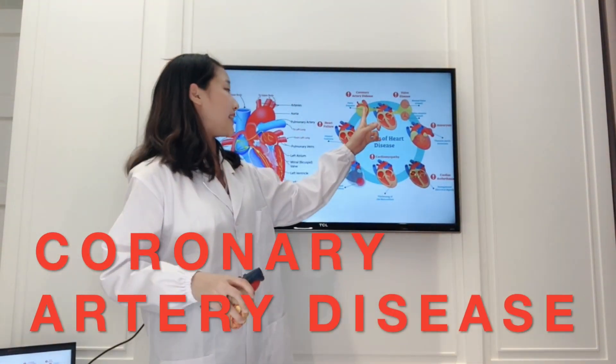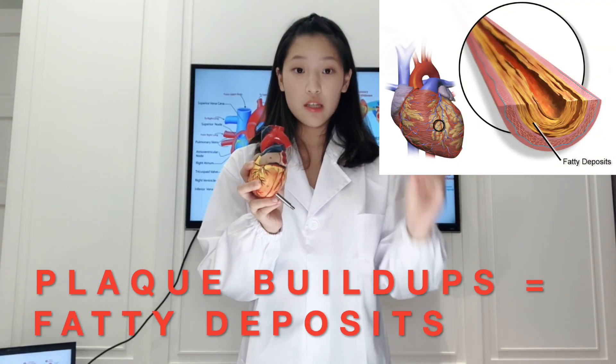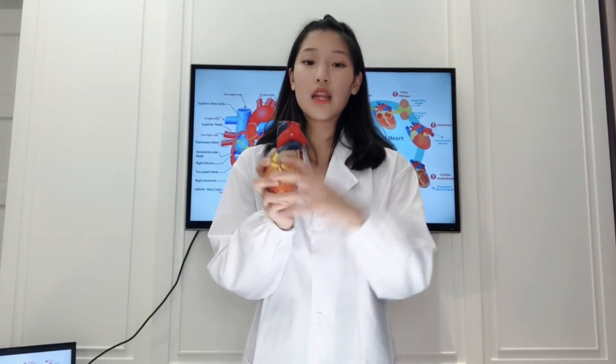First up, it would be coronary artery disease. So what is coronary artery disease? It is when here in the aorta, there's plaque buildup, which is caused by fatty deposits. And when it reaches an extent where blood couldn't pass through the aorta and go to, for instance, your brain, your kidney, your arm — then that could lead up to coronary artery disease, and that could cause possible death.